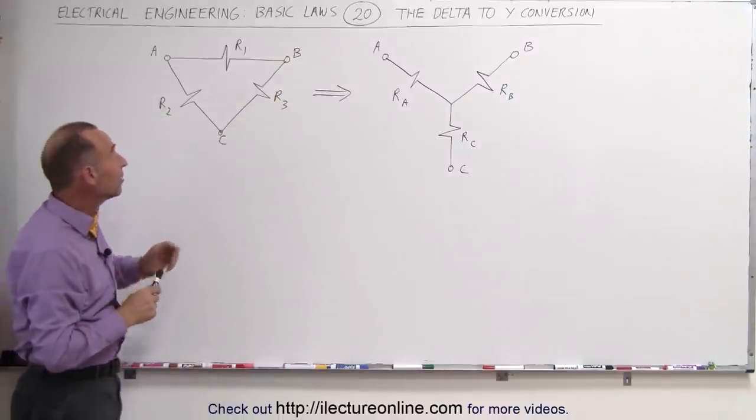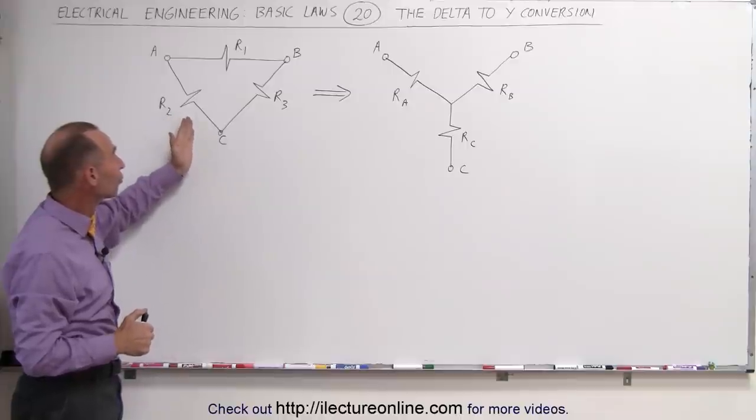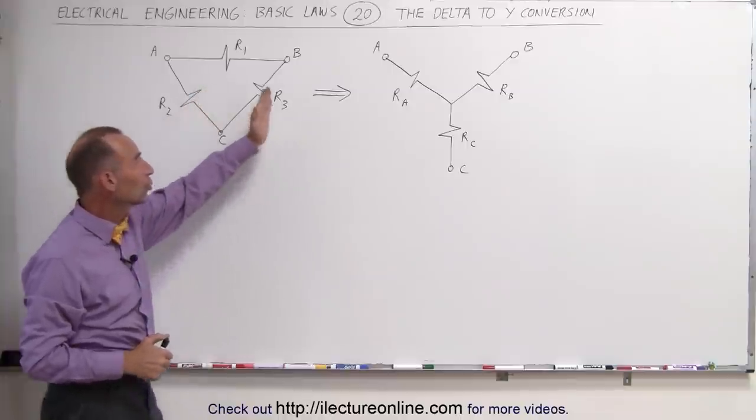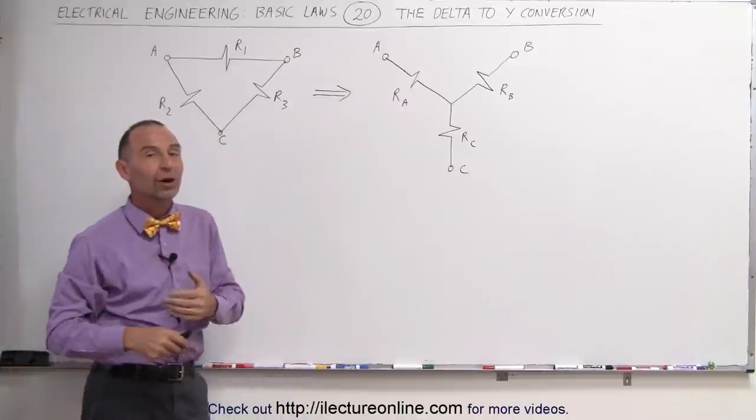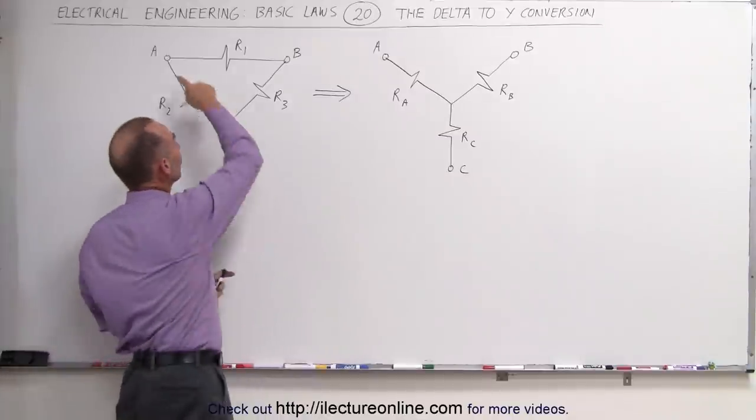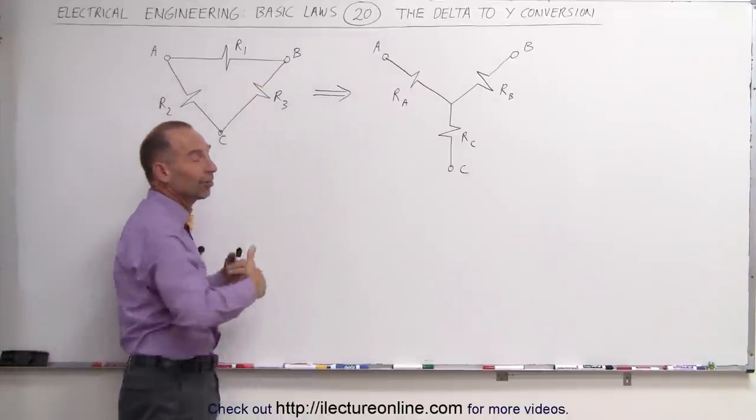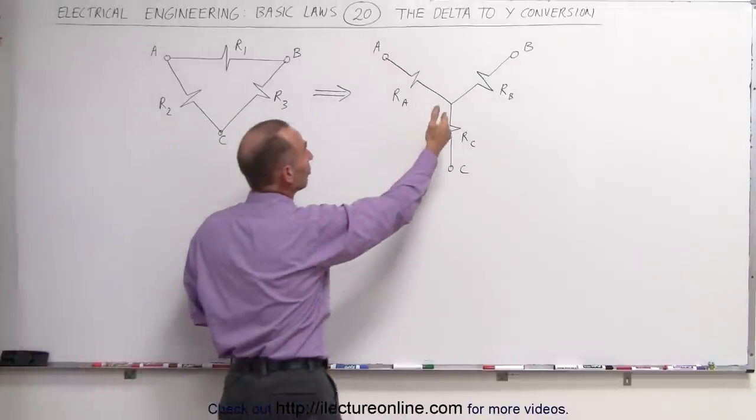Turns out we can easily translate or transform a Delta connection like this into a Y-shaped connection. That's why they call it a Delta to Y conversion. This looks like a Delta, in this case it's an upside-down Delta, and this looks like a Y.